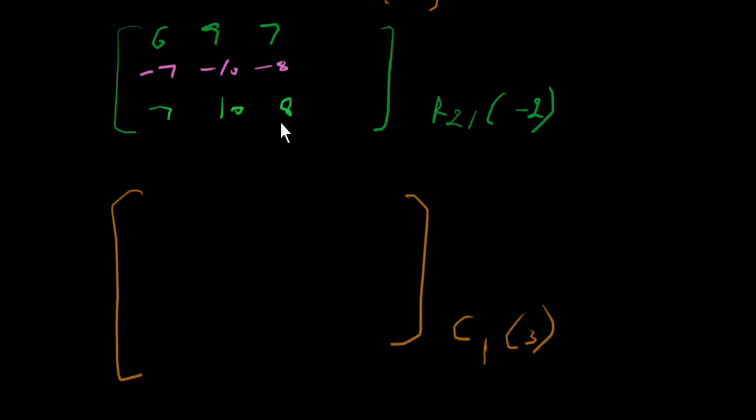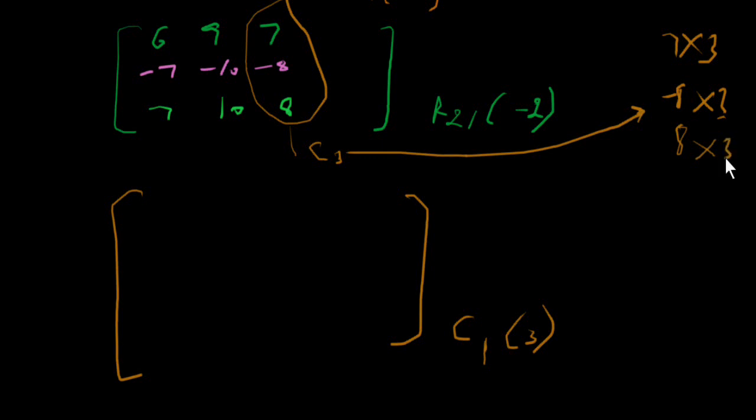I can also show column 1 multiply with 3. This is column C3 which I have to multiply with 3: 7 into 3, minus 8 into 3, and 8 into 3.